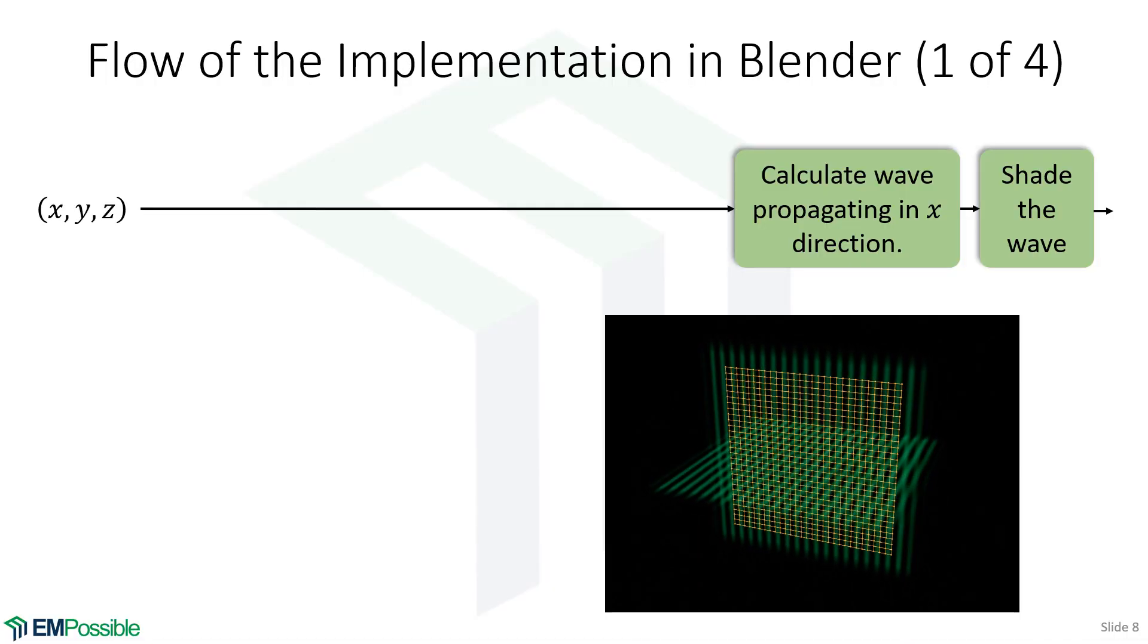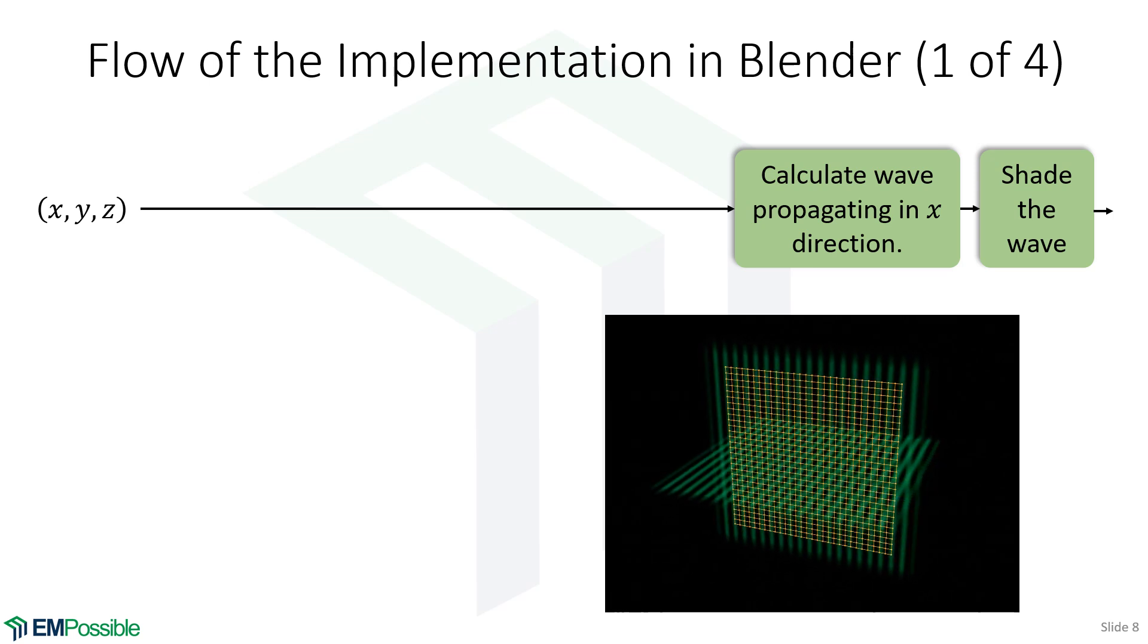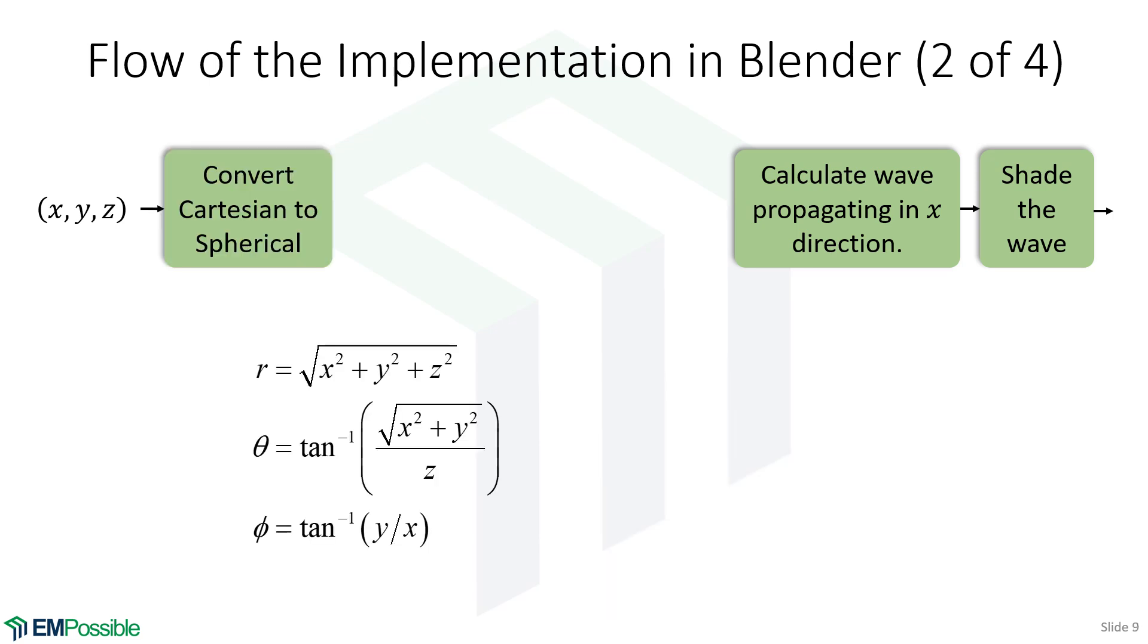Here's what's going to happen in Blender. We're going to open up Blender, set up a bunch of stuff, calculate a wave and shade it. By calculating the wave we're calculating the sine function here, and by shading it that means we're giving it the color, the transparency, all that kind of stuff - really making it look good. We're going to have the wave just propagate in the x direction, and that's pretty simple.